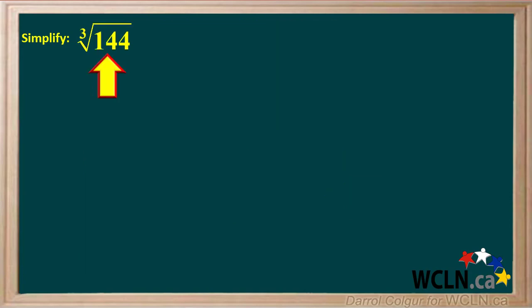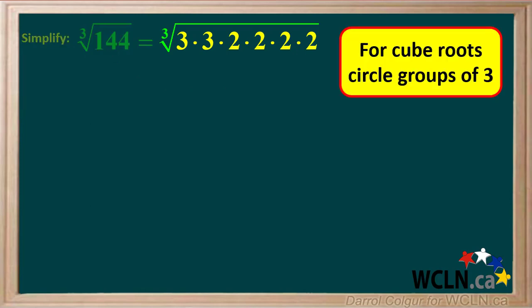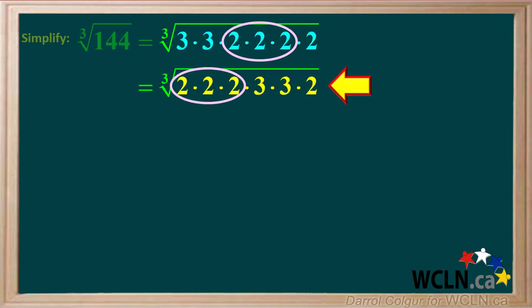Now we'll see if we can simplify a cube root. We're asked to simplify the cube root of 144. We can factor 144 into the prime numbers 3 times 3 times 2 times 2 times 2 times 2. When simplifying cube roots, we circle groups of 3 identical numbers. So we'll circle this group of 2's — that's the only group of 3 identical numbers we can find. We'll rearrange the numbers so the group of three 2's comes first, followed by 3 times 3 times 2.